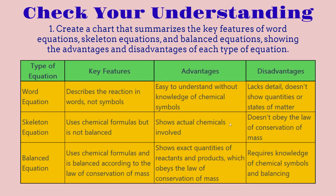On the left there's the types of equations: word, skeleton, and balanced equation. The key feature of a word equation is that it describes the reaction in words, not symbols. For the skeleton equation, it uses chemical formulas but is not balanced. For the balanced equation, it uses chemical formulas and is balanced according to the law of conservation of mass. For advantages: the word equation is easy to understand without knowledge of chemical symbols; the skeleton equation shows actual chemicals involved; the balanced equation shows exact quantities of reactants and products, which obeys the law of conservation of mass.